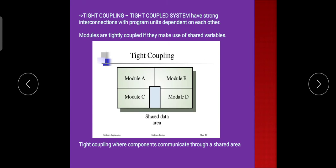Tight coupling: tight coupled systems have strong interconnections with program units dependent on each other. Modules are tightly coupled if they make use of shared variables. Tight coupling is where components communicate through a shared area. It can be better understood by seeing the diagram.